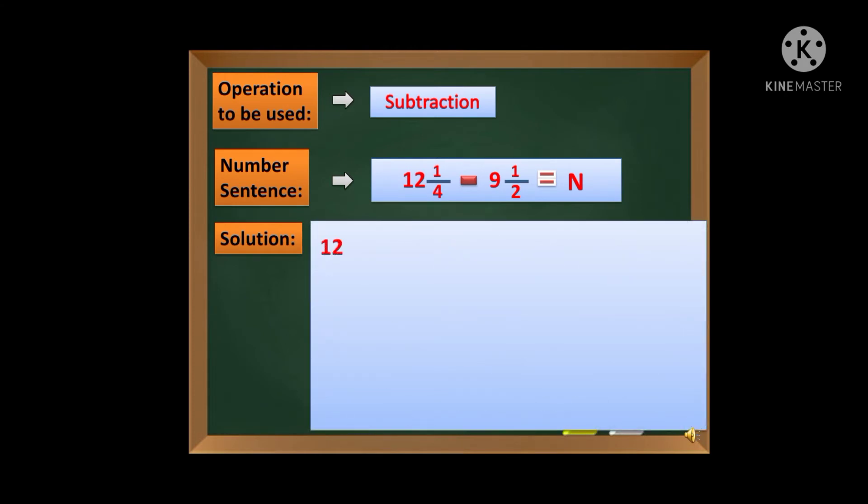Yan na po ang magiging solution natin: 12 and one-fourth minus 9 and one-half is equal to N. Dahil alam po natin na si one-fourth and one-half is dissimilar fractions, hahanapin po natin ang kanyang least common denominator. At akin na pong na-explain ito sa mga nakaraan nating video. Okay, so LCD - 4 na muna ang unayin. We have 4, 8. Next, si ito naman we have 2, 4. At si 4 at si 2 ay mayroong pari yung 4, kaya ang gagamitin natin is 4. So si 4 na ang bago nating LCD.